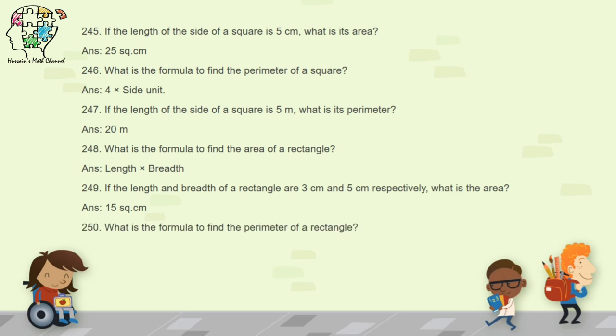Question 250: what is the formula to find the perimeter of a rectangle? The perimeter equals 2 times (length plus breadth). In a rectangle there are 2 lengths and 2 breadths, so you add all of them — length plus breadth times 2.